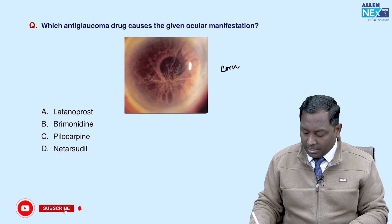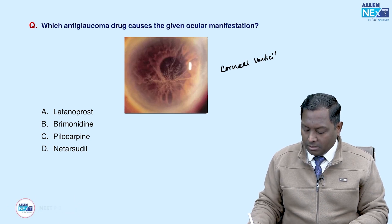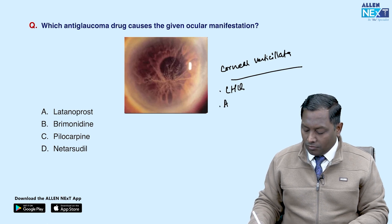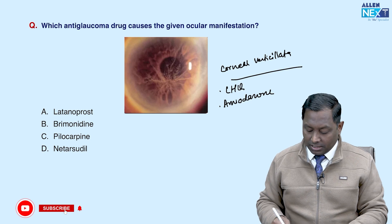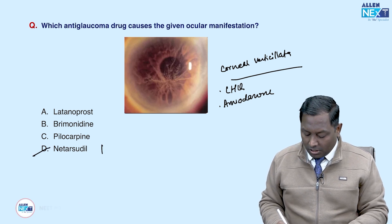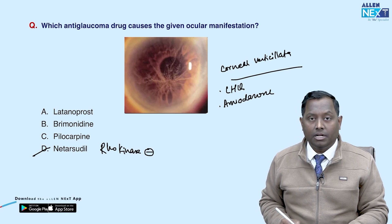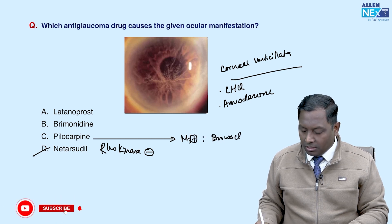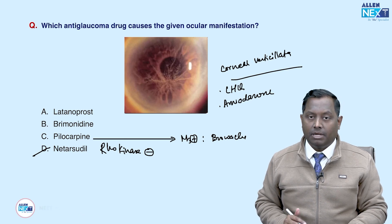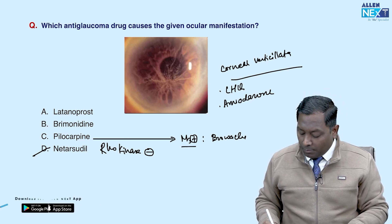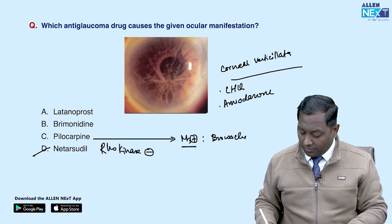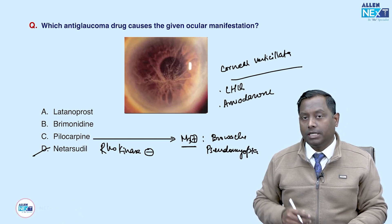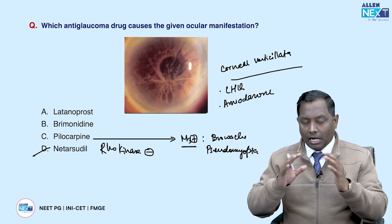Which anti-glaucoma drug causes cornea verticillata? This can be associated with drugs like chloroquine, hydroxychloroquine, or amiodarone. There are also some reports associating it with netarsudil, a Rho-kinase inhibitor. Pilocarpine is an M3 agonist that can cause browache and frontal headache due to ciliary muscle spasm — the M3 receptor is also present on the ciliary muscle. Pilocarpine can also lead to pseudomyopia.